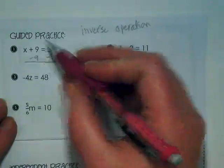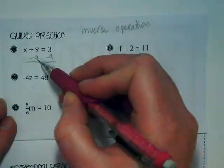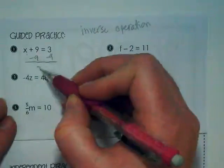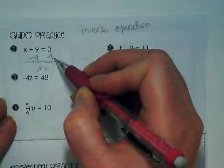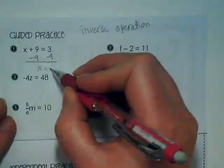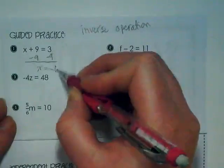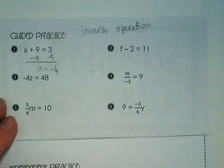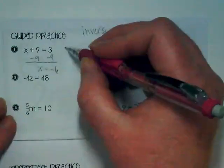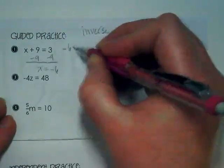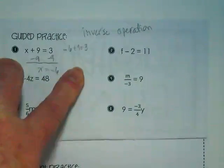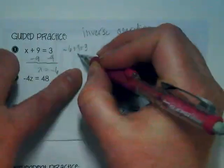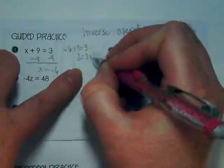What's that leave us with on the left side? We have positive 9 and negative 9 gives us 0, so what's left is the x. On the right side of this equation, we have a positive 3 and a negative 9, which leaves us with a negative 6. We check our work. So I'm going to rewrite this with negative 6 in place of x. What is negative 6 plus 9? So if I get 3 is equal to 3, then I know I've done it correctly.